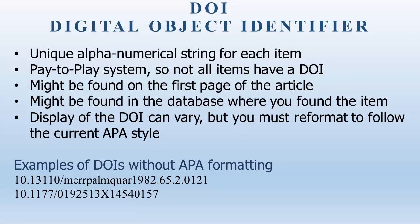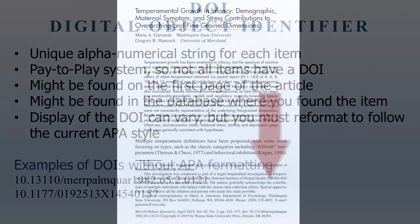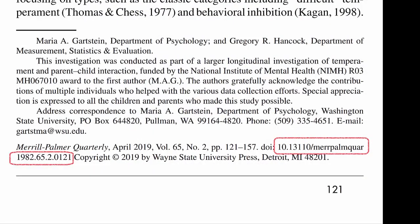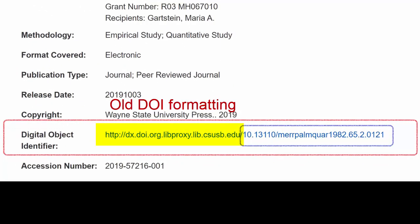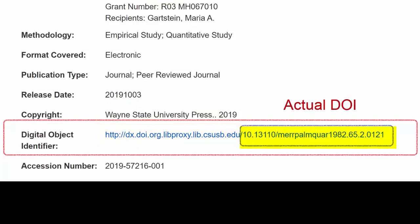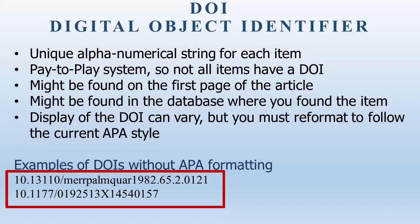DOI stands for Digital Object Identifier. A DOI is a unique alphanumeric string assigned to each item. The DOI system is a pay-to-play system, so not all digital objects have DOIs. It is primarily used for articles in scholarly journals. An article's DOI might be found on the first page of the article, but sometimes it can only be found in the database where you found the article. DOIs have been formatted in several different ways over the years, but you must use the current APA format, so convert it to the format being shown.